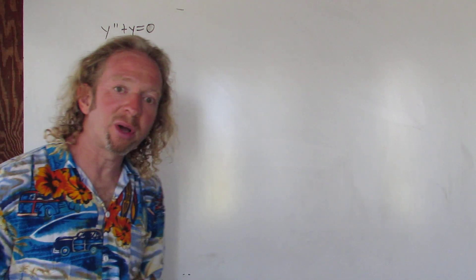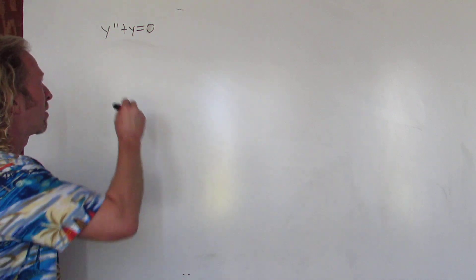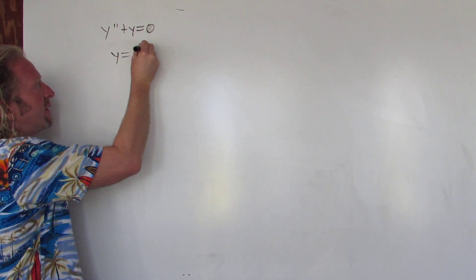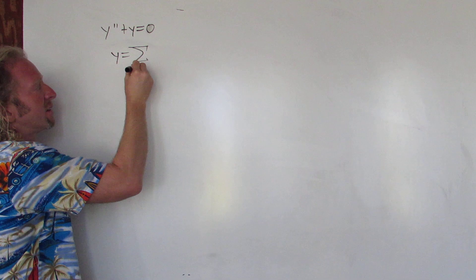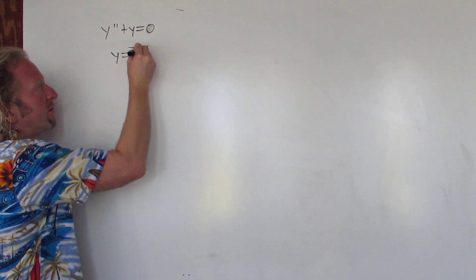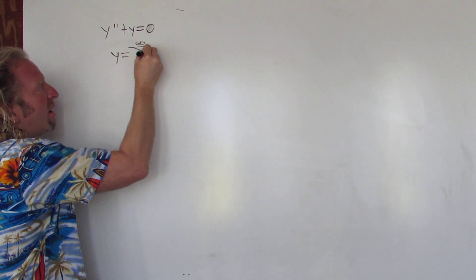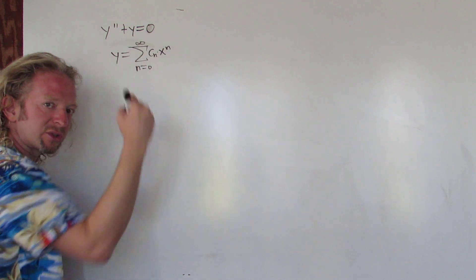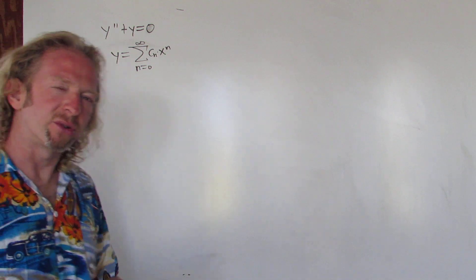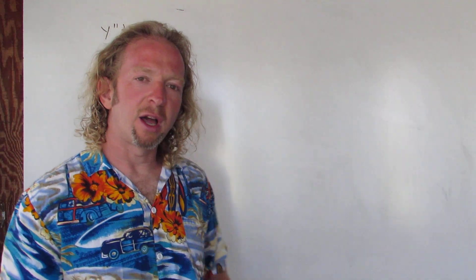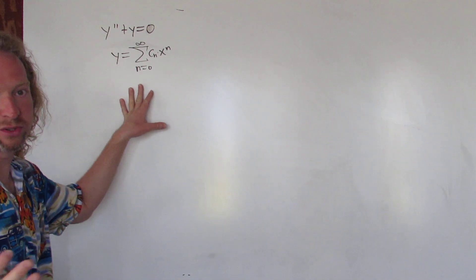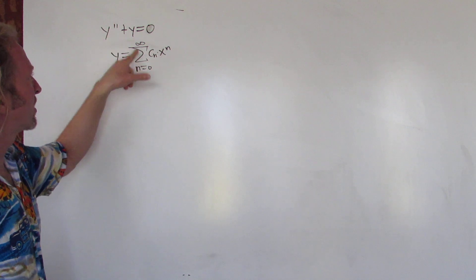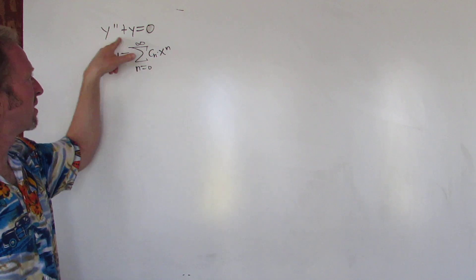Step one when you're doing power series is you start by letting y be equal to the infinite sum as n runs from 0 to infinity of c sub n times x to the n. We'll assume that there is a solution to this differential equation in the form of a power series centered at 0. Now we just have to plug this into the DE.